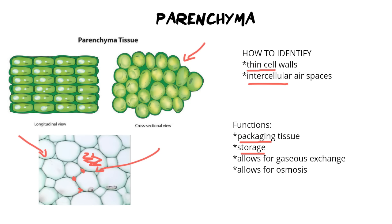The intercellular air spaces allow for gaseous exchange, because gases can literally exchange in that empty space. They also allow for osmosis, because you need an empty space for water to move through. That's what parenchyma does for plants.